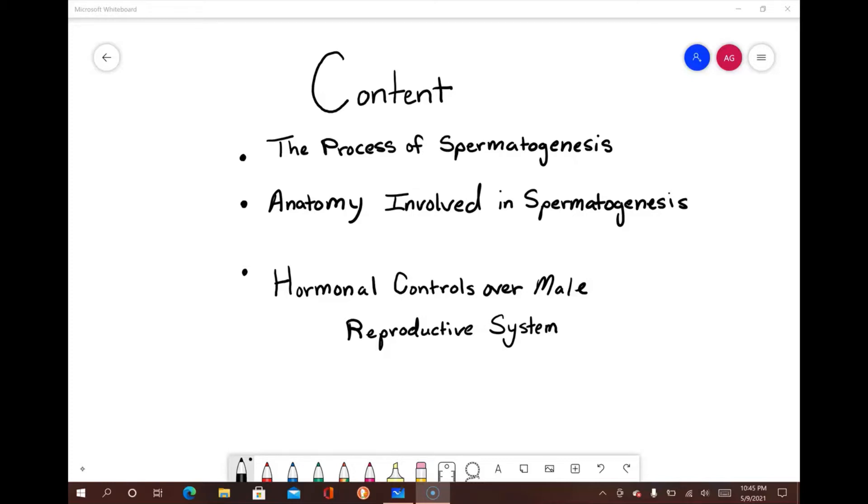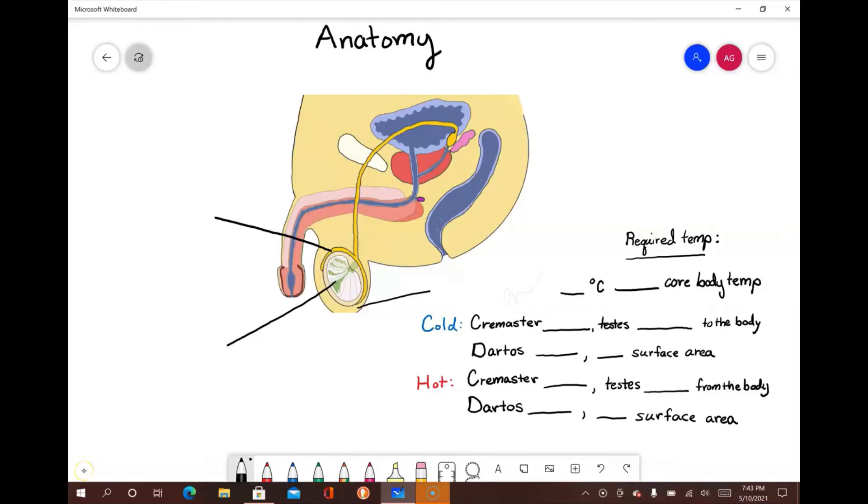Erection and ejaculation are dependent on the divisions of the nervous system, while the endocrine system and its hormones initiate spermatogenesis and drive the development of male reproductive structures. In this video, I will be covering part one of the male reproductive system: the process of spermatogenesis, the important anatomy to know when discussing spermatogenesis, and the hormonal controls over the male reproductive system.